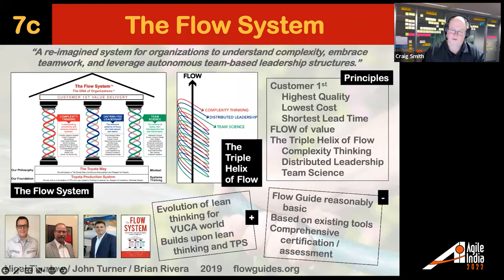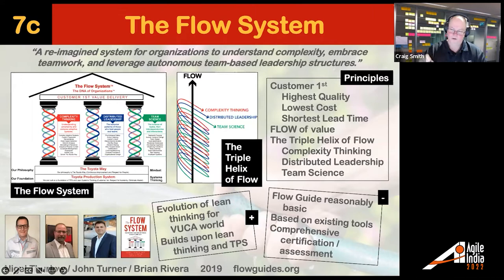One of the more modern attempts to make Lean more available is the Flow System, which came out a few years ago from Nigel Thurlow, John Turner, and Brian Rivera — ex-Toyota folks trying to apply lean to our VUCA type world. They have the house like Lean does, but with a focus on what they call the triple helix of flow: complexity thinking, distributed leadership, and team science. You can get the Flow Guide for free, and there's a book behind it as well.